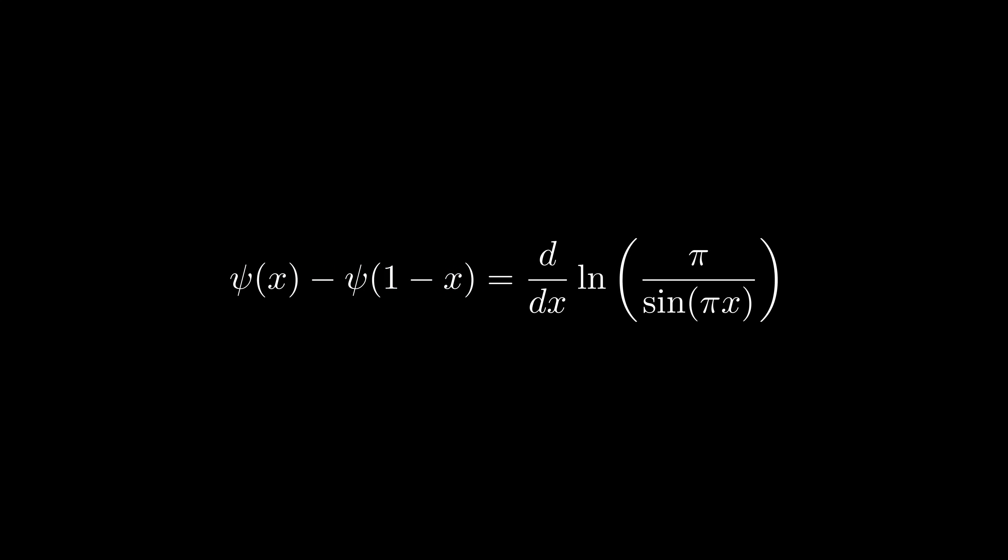Now, the right side has a division inside the log, which splits into a difference of logs. The first one is now the derivative of a constant, so it's just zero. For this remaining derivative, we'll have to use the chain rule, which says that the derivative of g of f is g prime of f times f prime. In our case, g is the natural logarithm, so taking its derivative, we end up with just f prime over f. Applying this to our equation, we get this, and the derivative of sine of pi x is pi cosine of pi x.